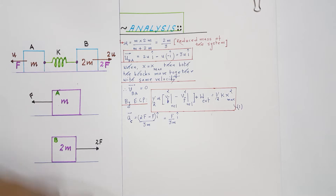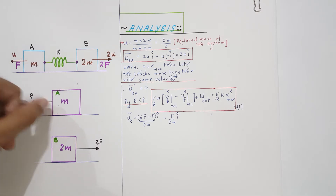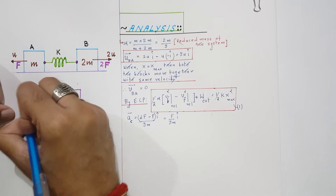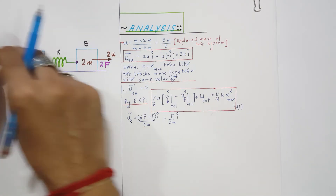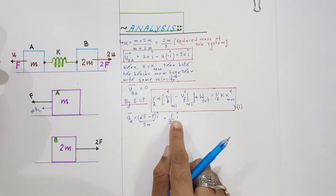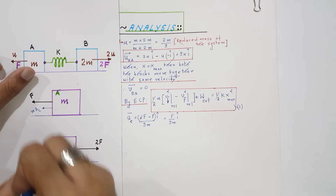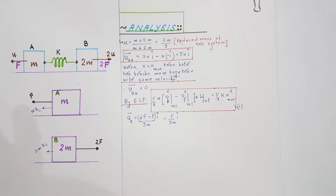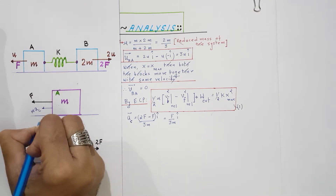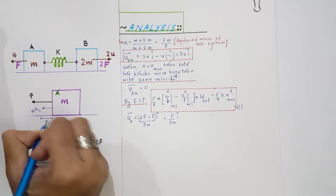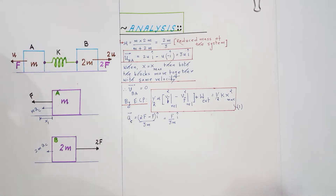Since the center of mass is accelerating, it is a non-inertial frame, so there will be pseudo forces. Block A experiences a pseudo force of m·a_cm, and block B experiences a pseudo force of 2m·a_cm, both acting opposite to the direction of center-of-mass acceleration. Now suppose block A is displaced by x₁ and block B is displaced by x₂, owing to the action of these forces.